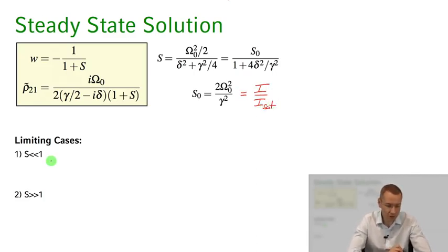So this would correspond to very weak intensities or a highly damped system. So this ratio of Rabi frequency to γ to damping is very small, so we have a highly damped system.